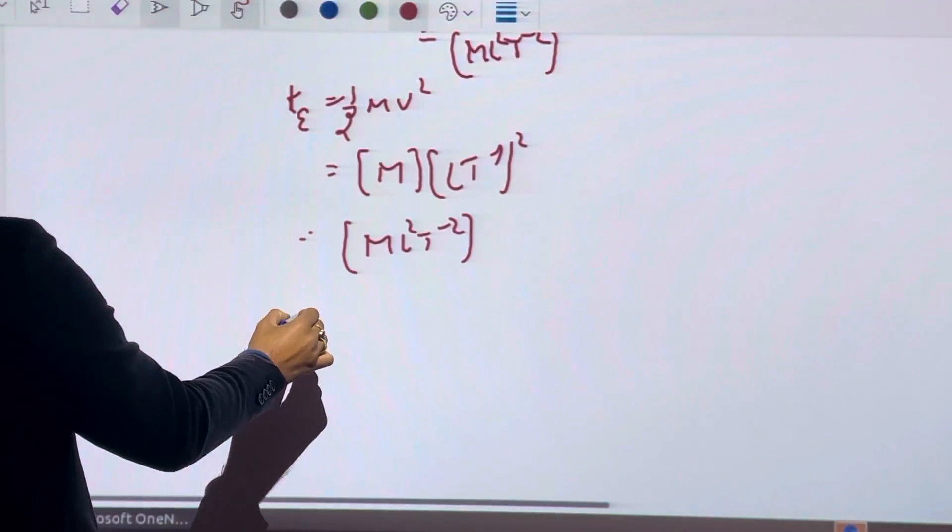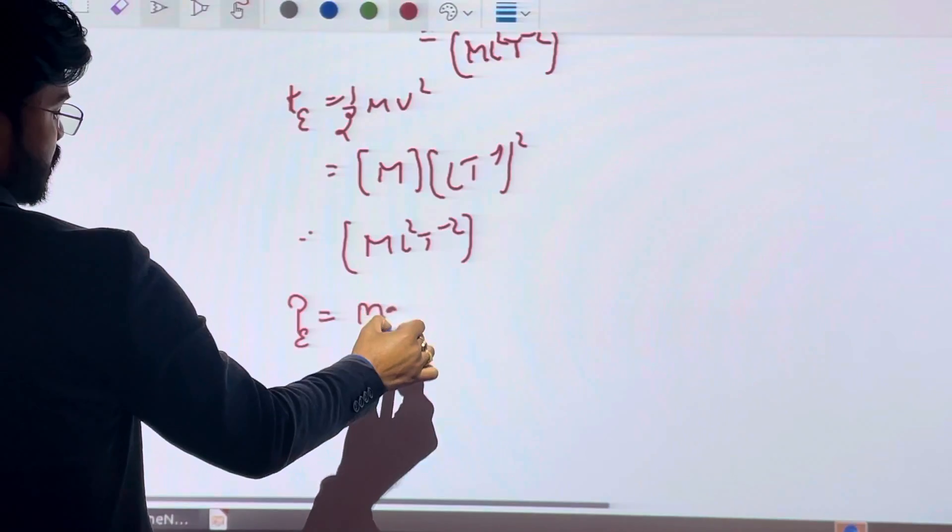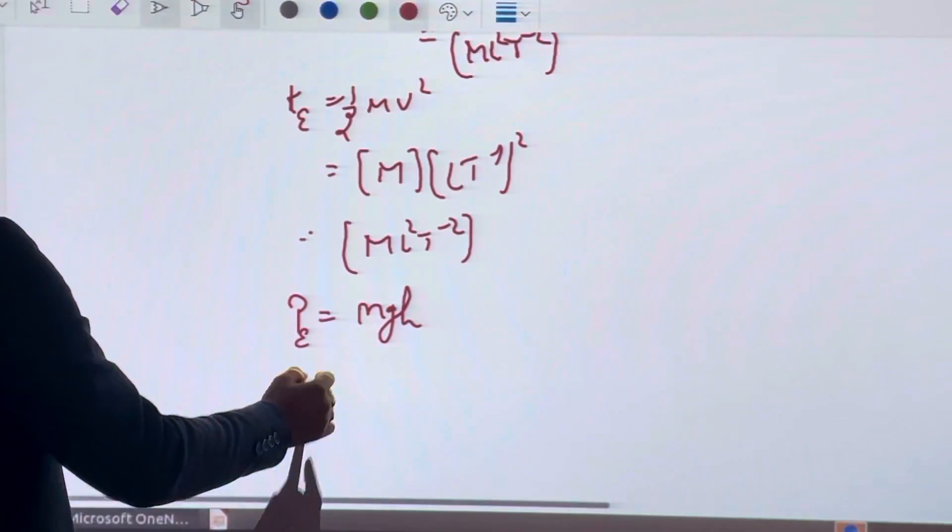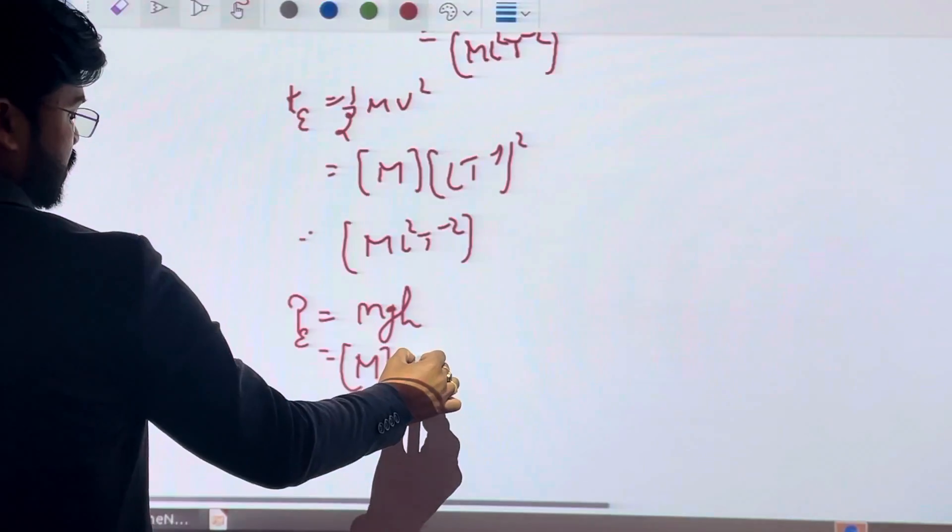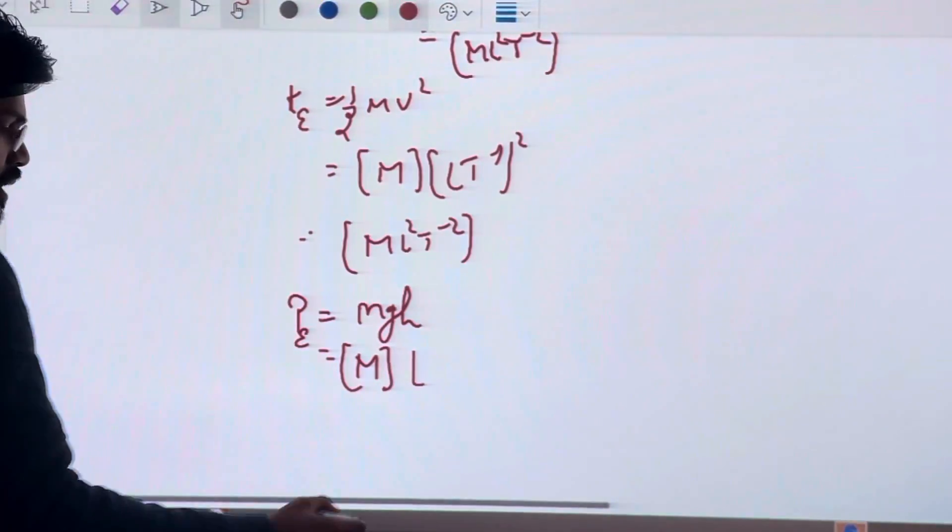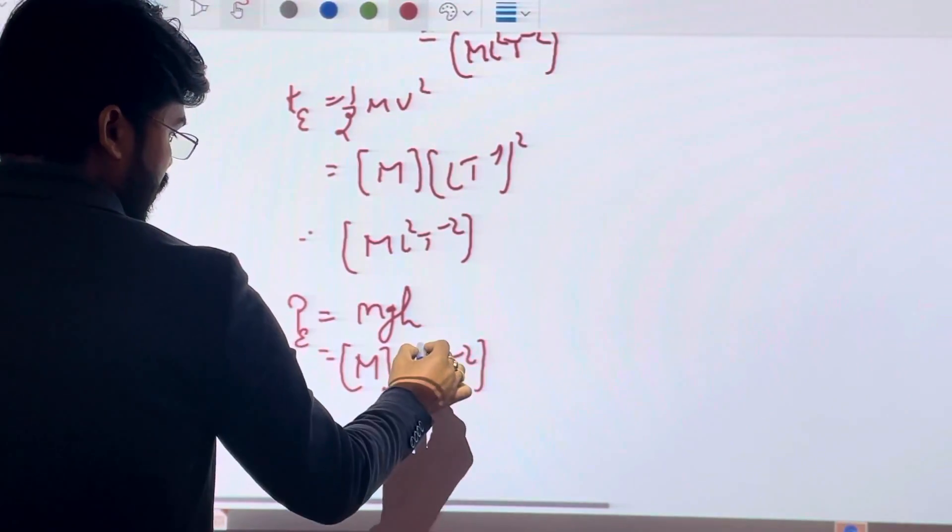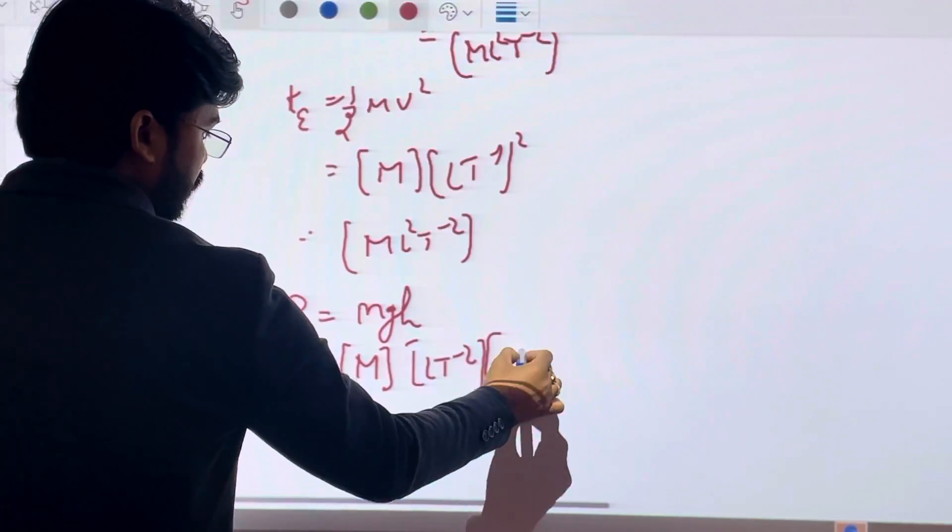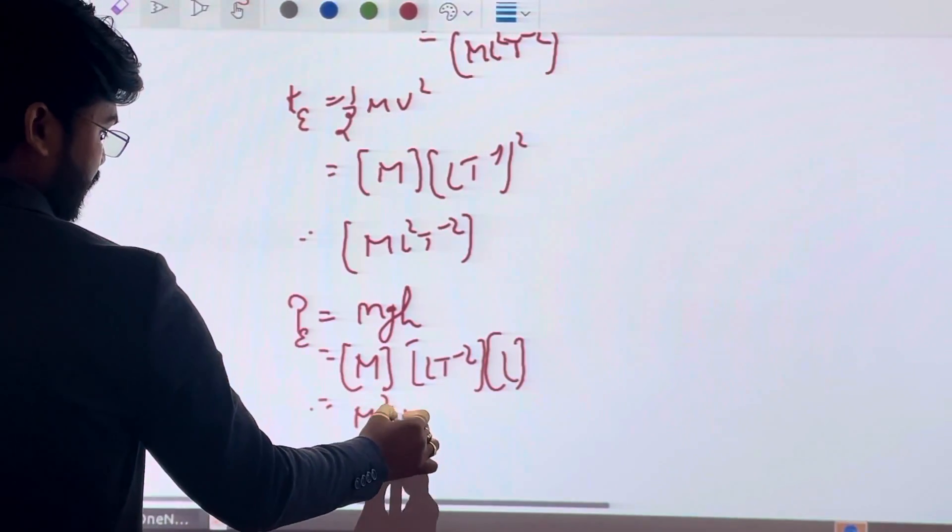Similarly, potential energy P equals mgh. Dimension of M is M and g is acceleration due to gravity, so LT minus 2, and h for L. So dimension will be ML²T minus 2.